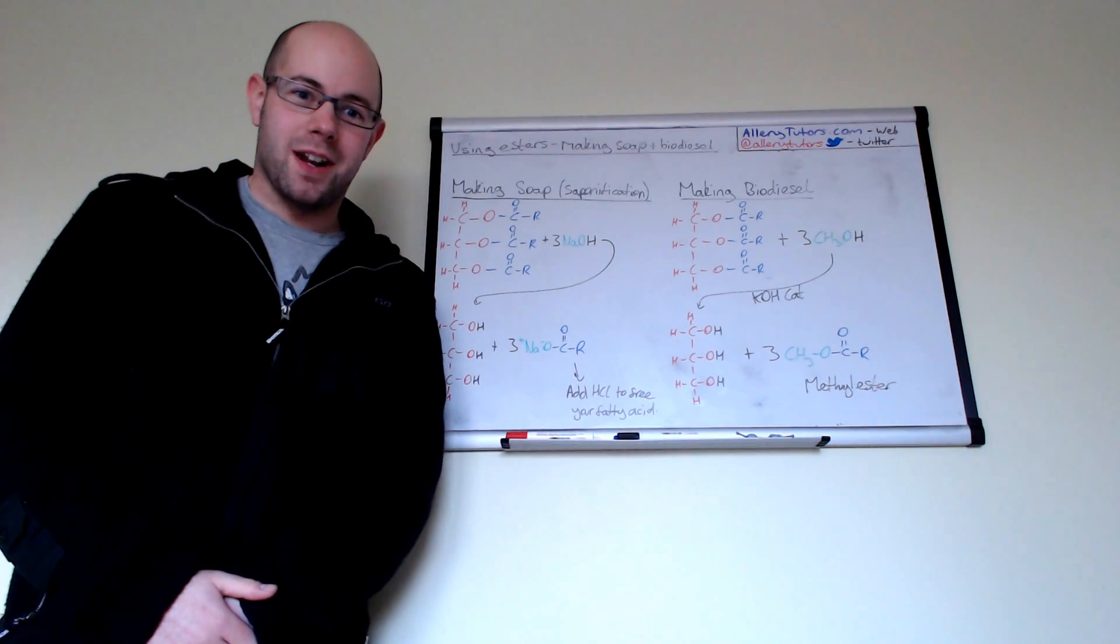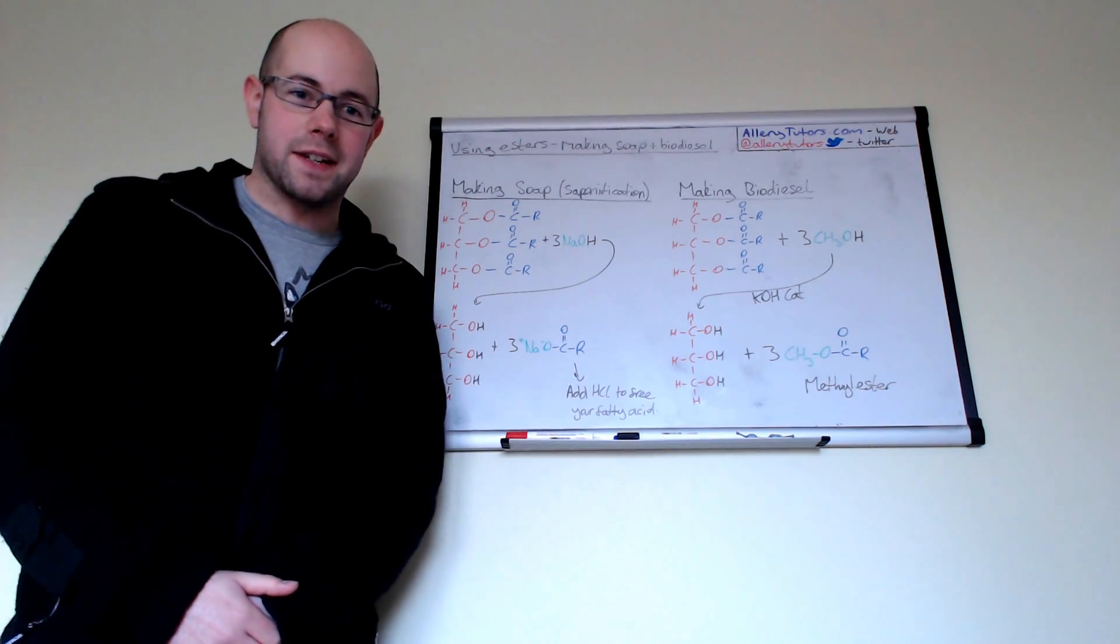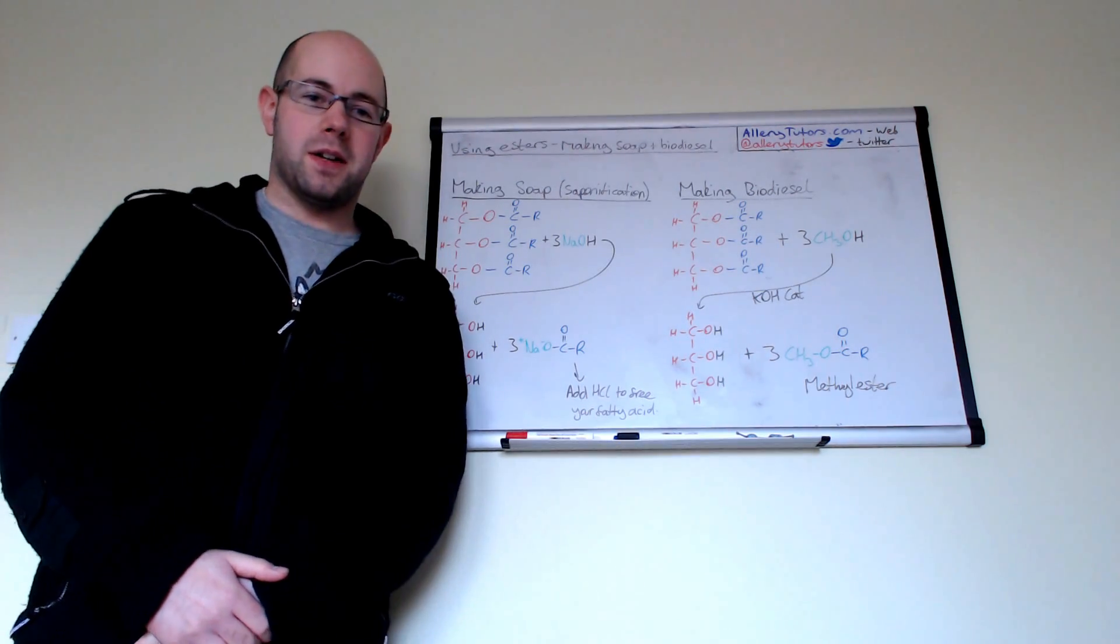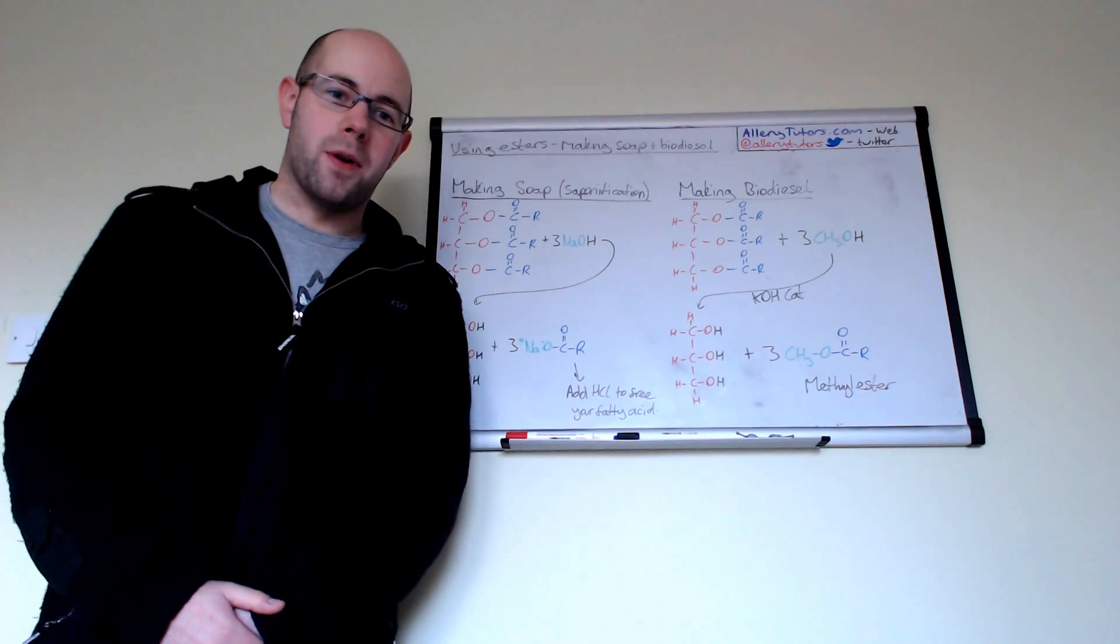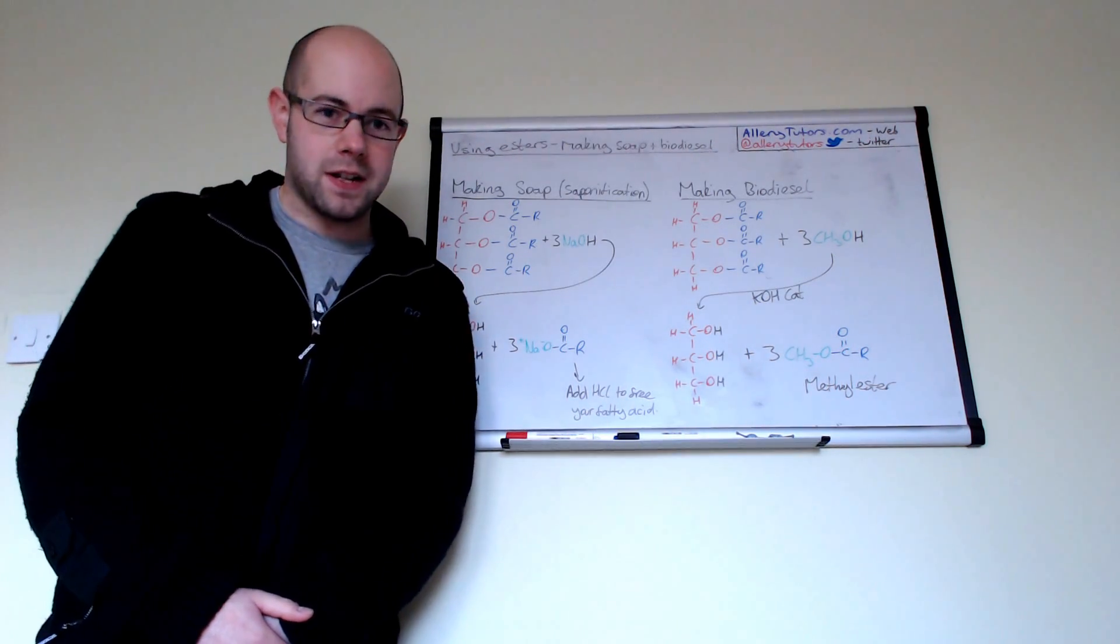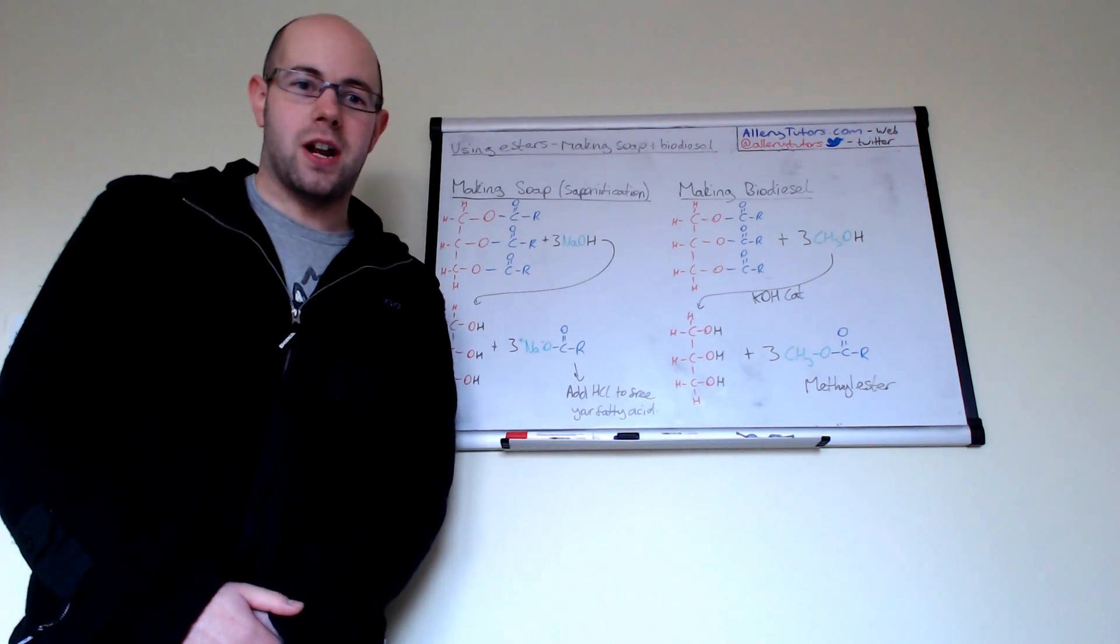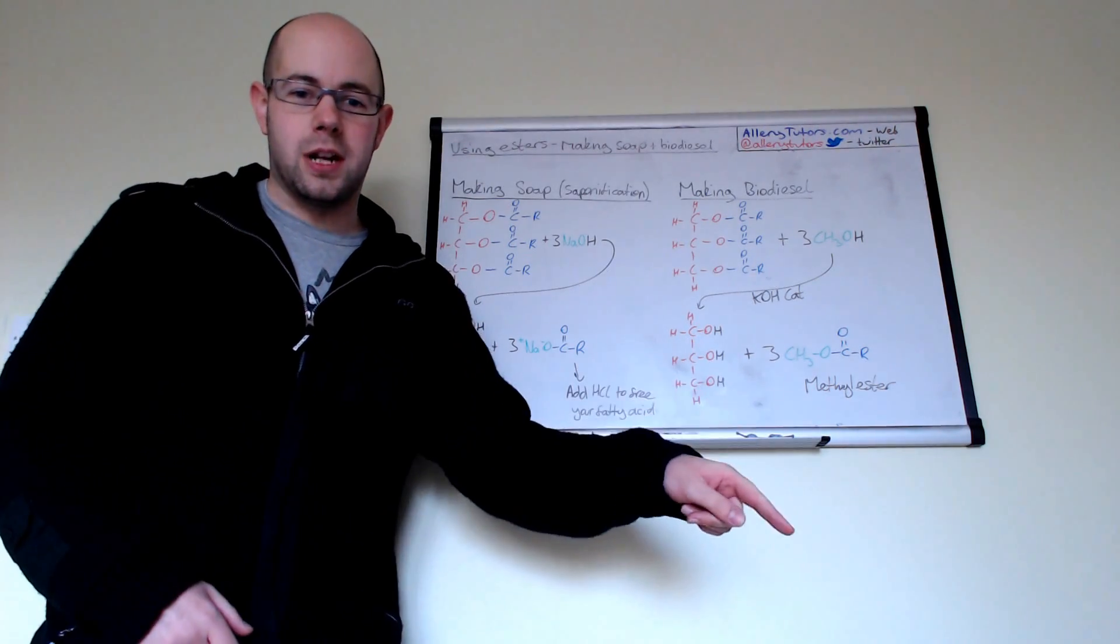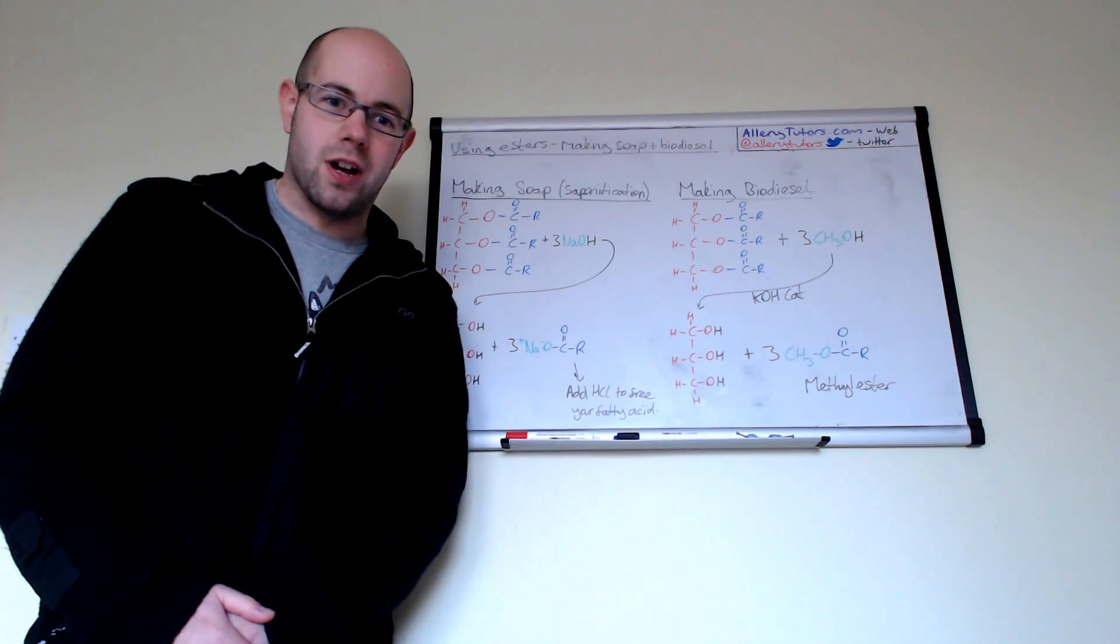Hi everybody, my name is Chris Harris from alimorytutors.com. In this video we're going to look at using esters, and in particular how you can make soap and biodiesel. These two products are made from something called a triester, which is made by reacting fatty acids with glycerol. If you're not sure how that reaction works, there's a video with more detail. For this video, I'm going to assume you know what those reactions are.